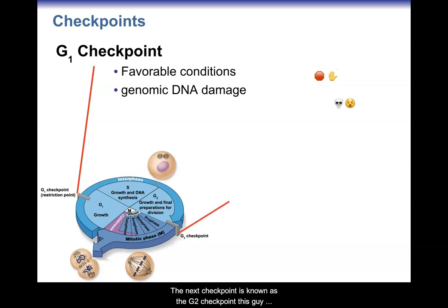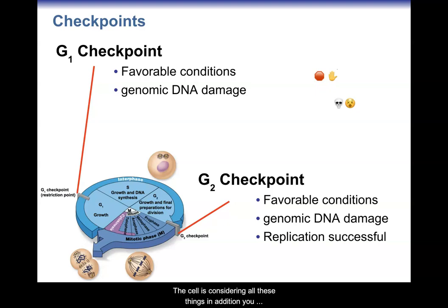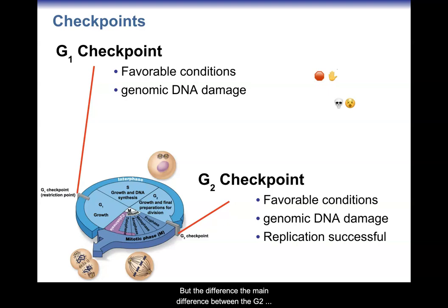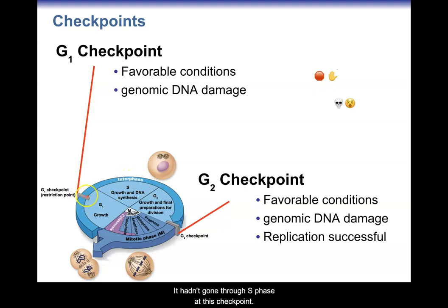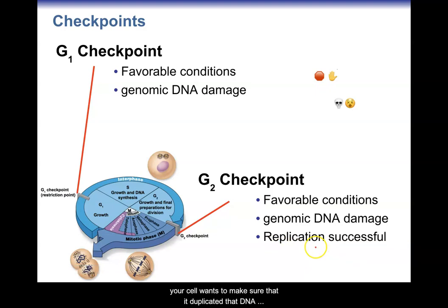The next checkpoint is the G2 checkpoint. This also checks for favorable conditions — pH, temperature, nutrients, energy, and whether neighboring cells are signaling to move on to mitosis. It also checks for genomic DNA damage. The key difference between the G2 checkpoint and the G1 is that at the G2 checkpoint — right at the very end of interphase — the cell has already duplicated its DNA through S phase. So at the G2 checkpoint, we make sure that DNA duplication occurred successfully, since it's an intense process with many possible hiccups. The cell wants to confirm it duplicated its DNA correctly before forming a daughter cell.